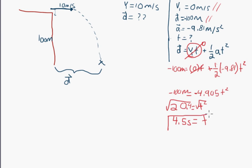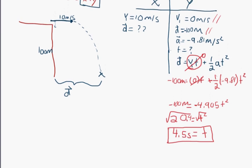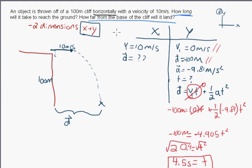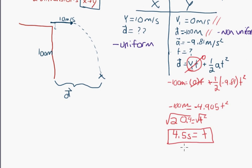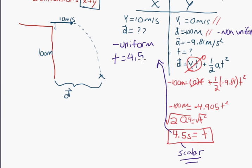So time equals 4.5 seconds — that's the answer for the y-component. It's very important to understand how we split up the x and y components and never mix information between them. Notice that time is a scalar, so it can be used in both components. The time in x equals the time in y.